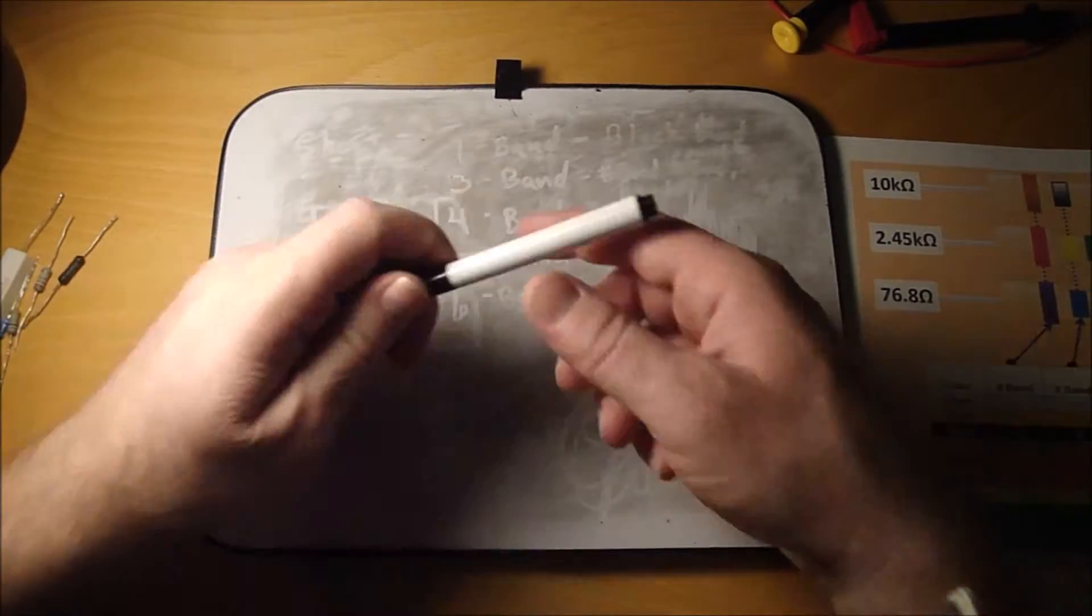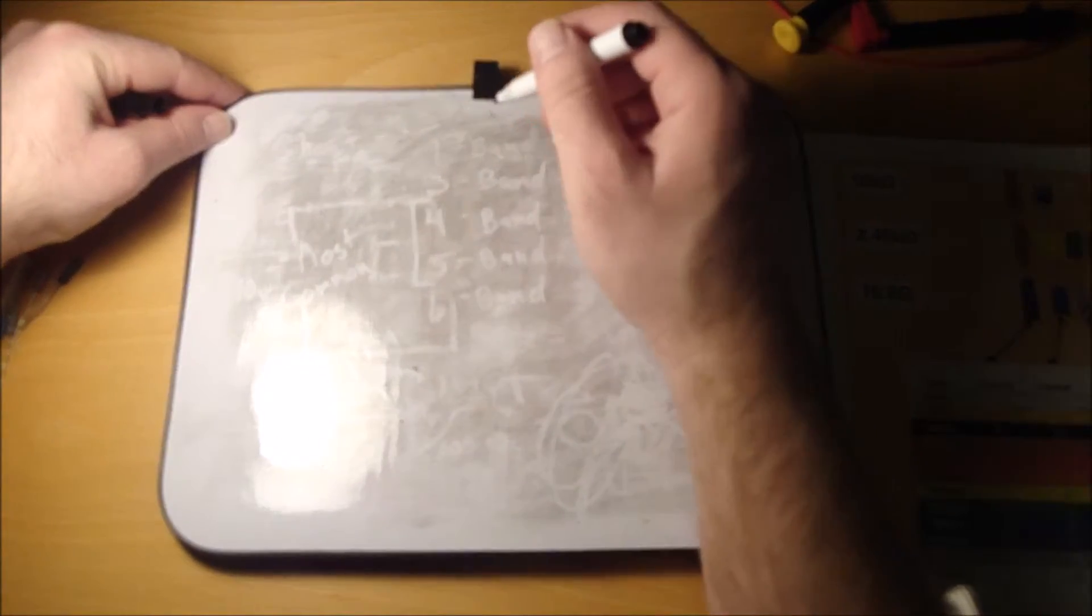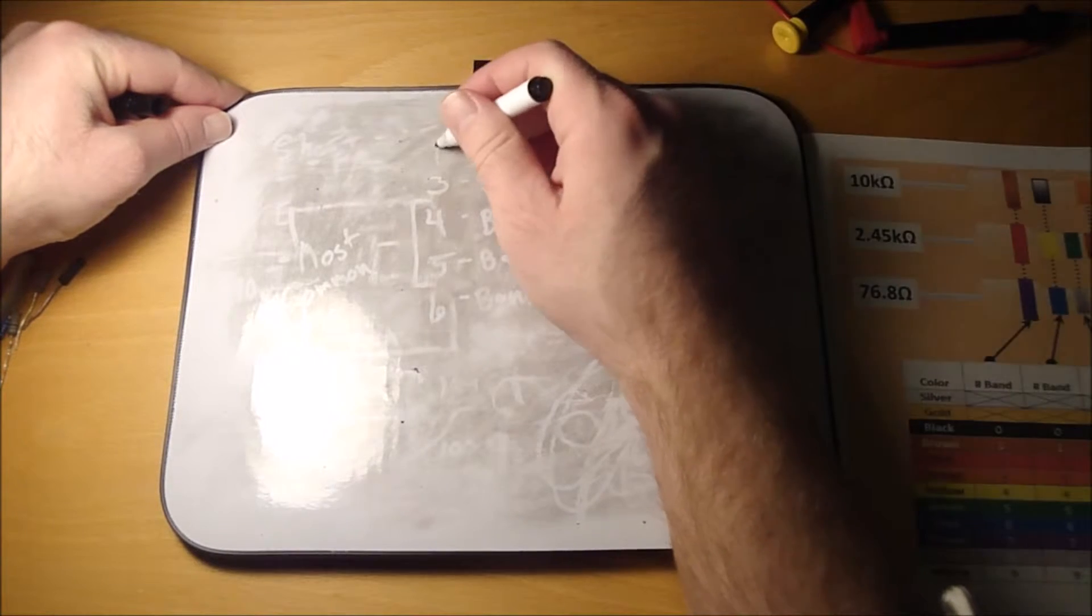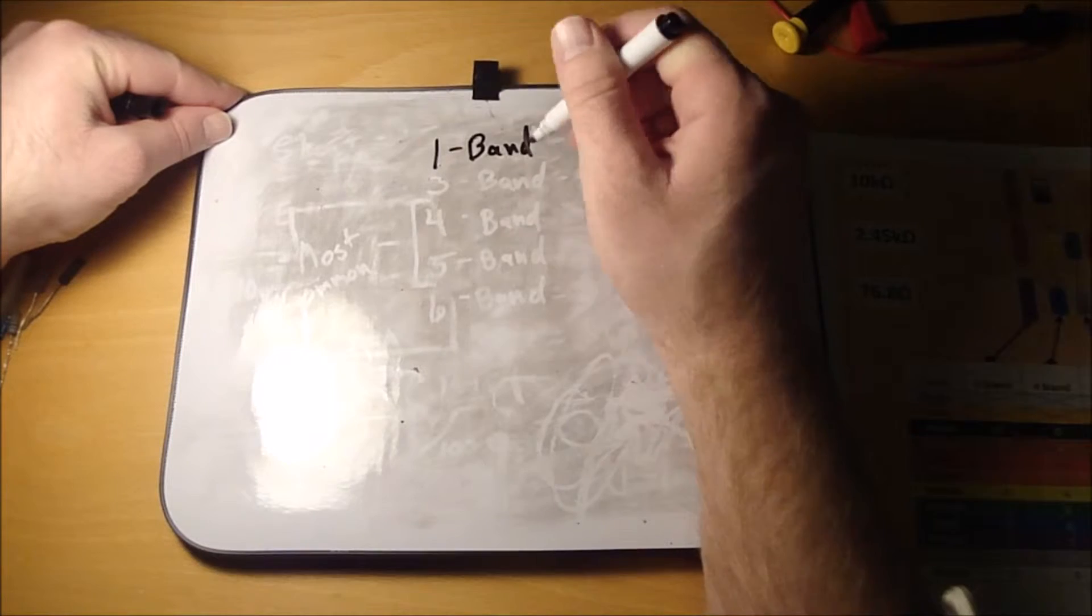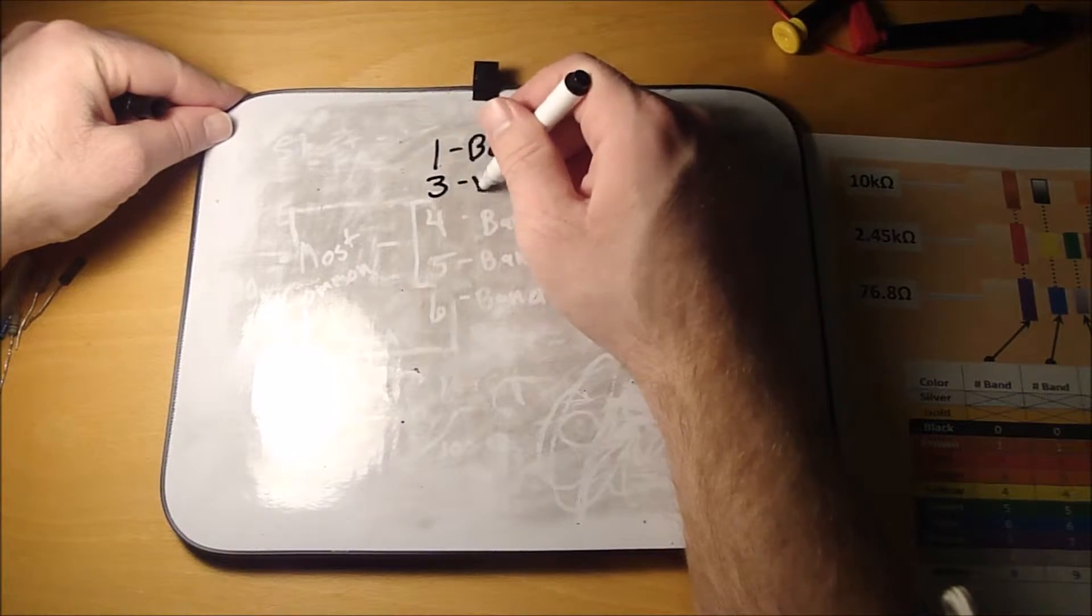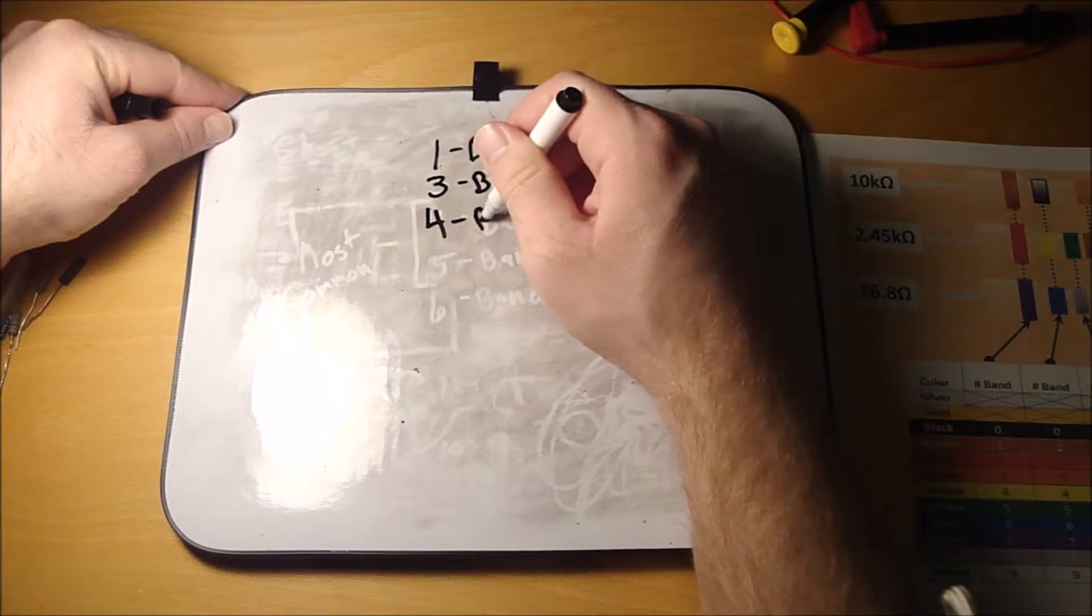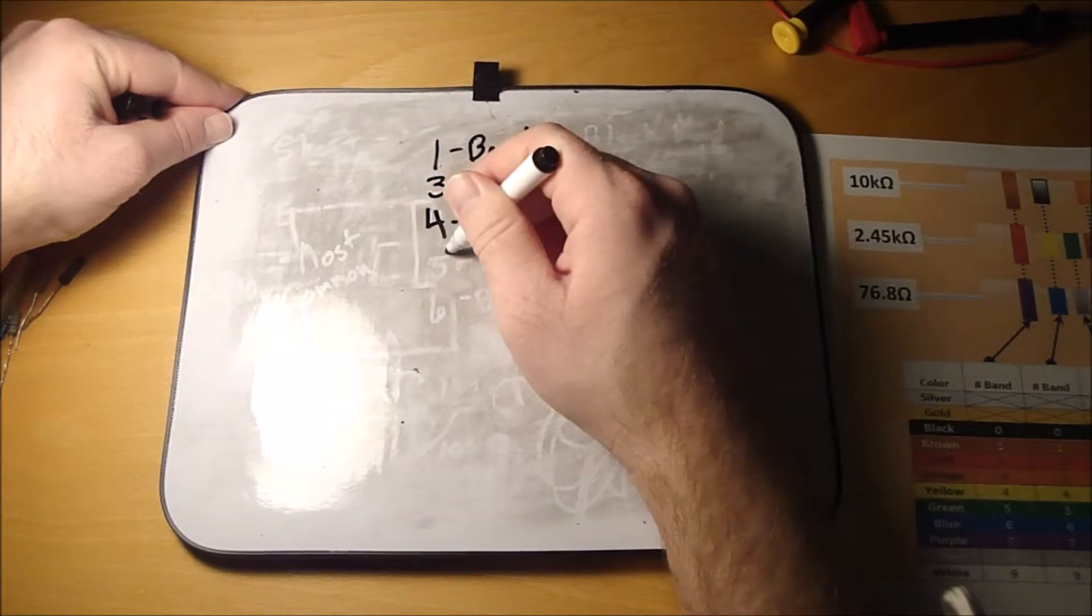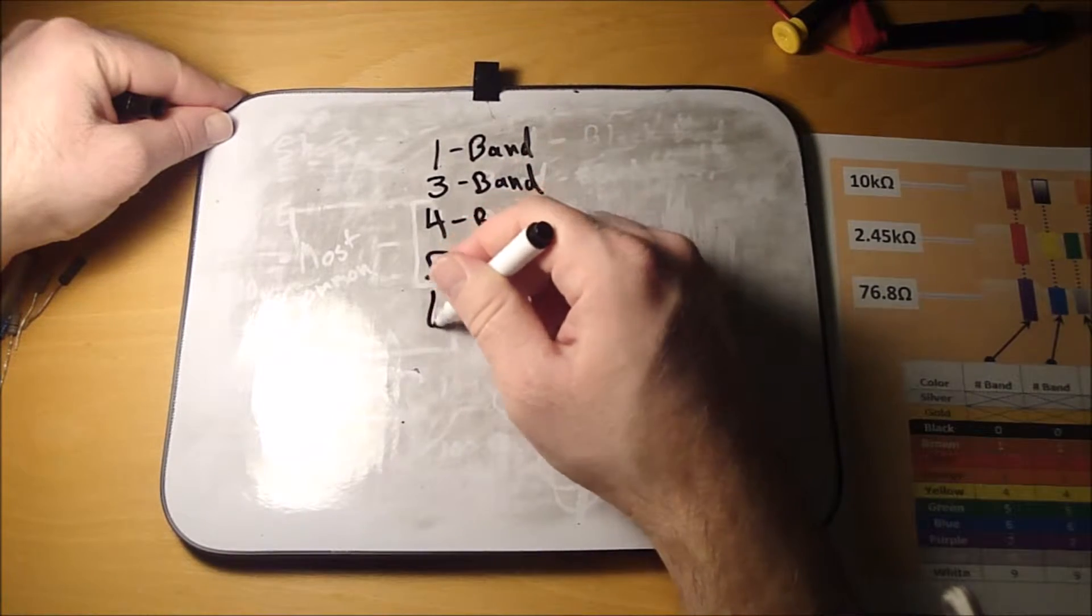There's several different types of color bands you'll see on resistors. There's a resistor that will only have one band, and there's three band, four band, five band, and six band.